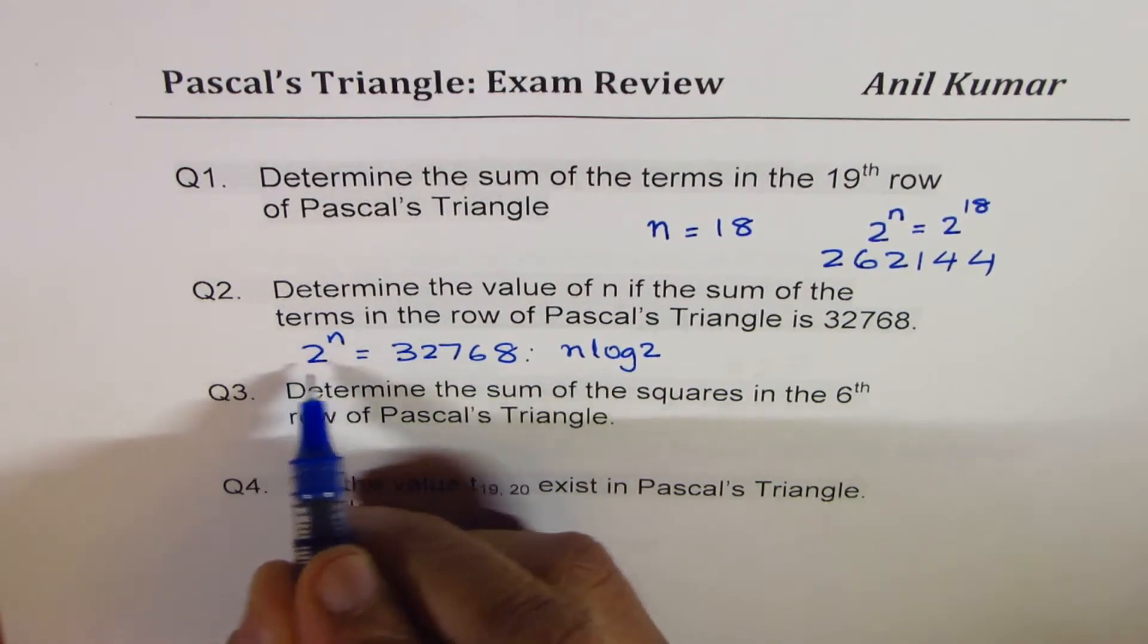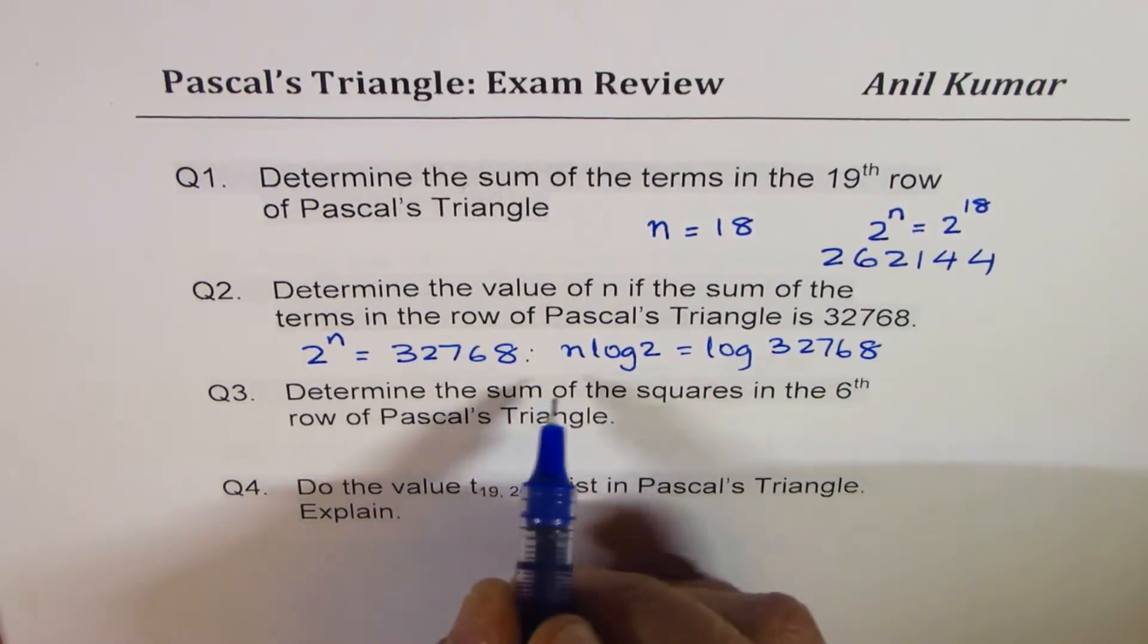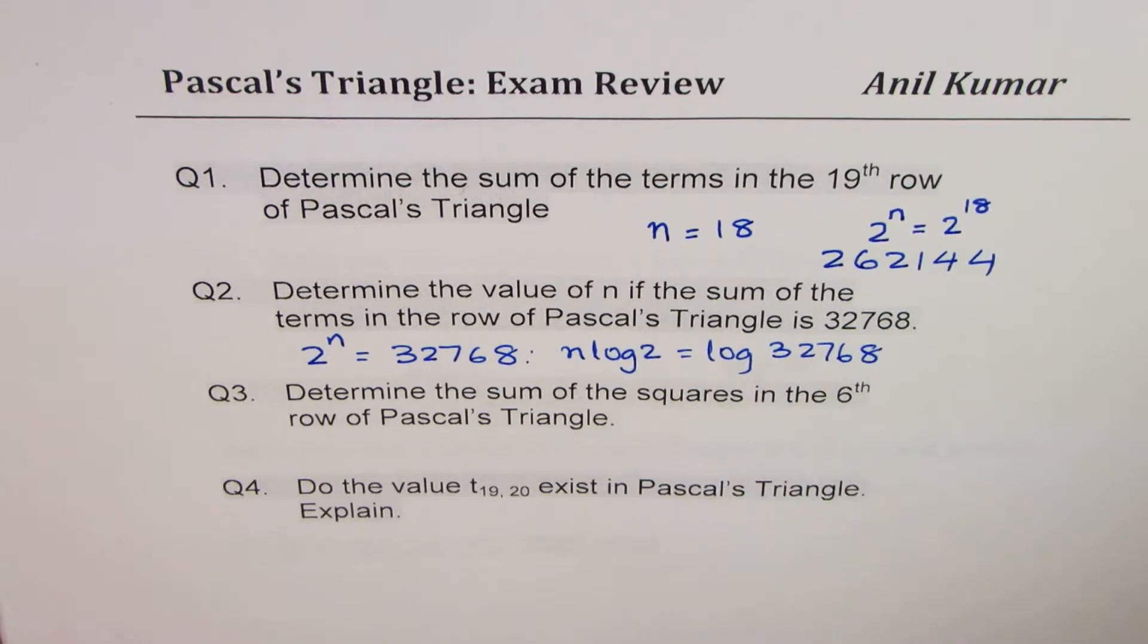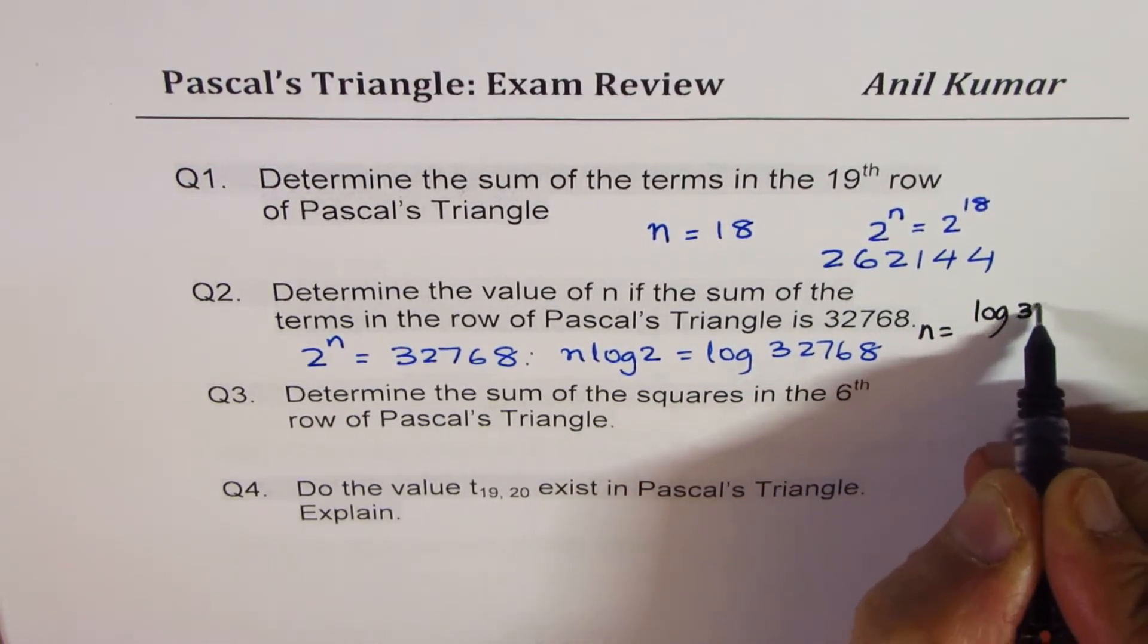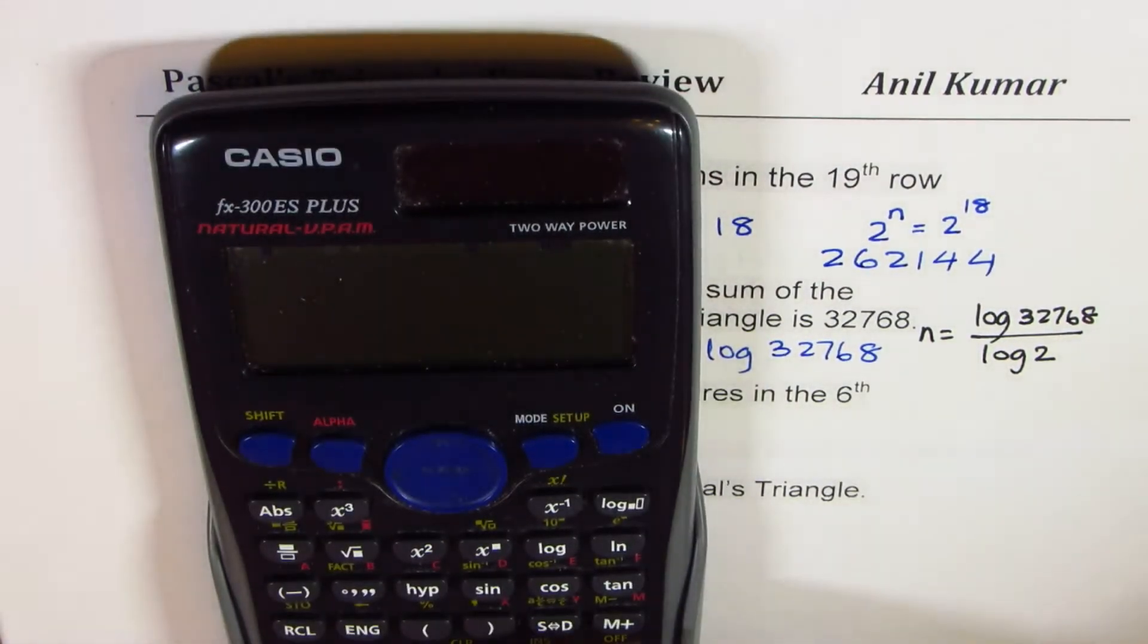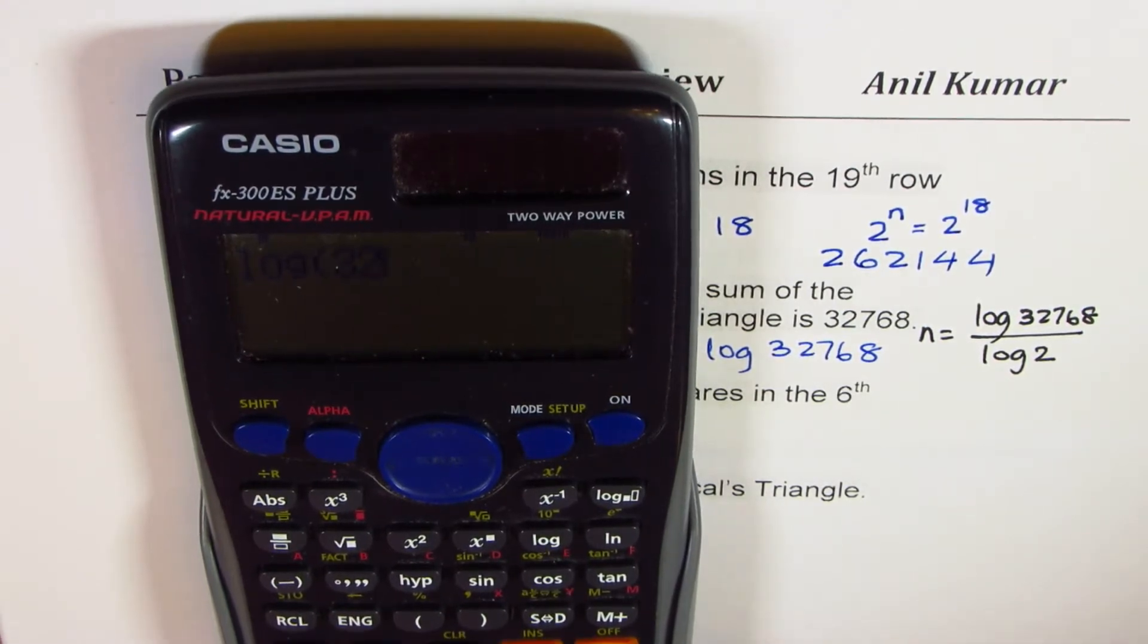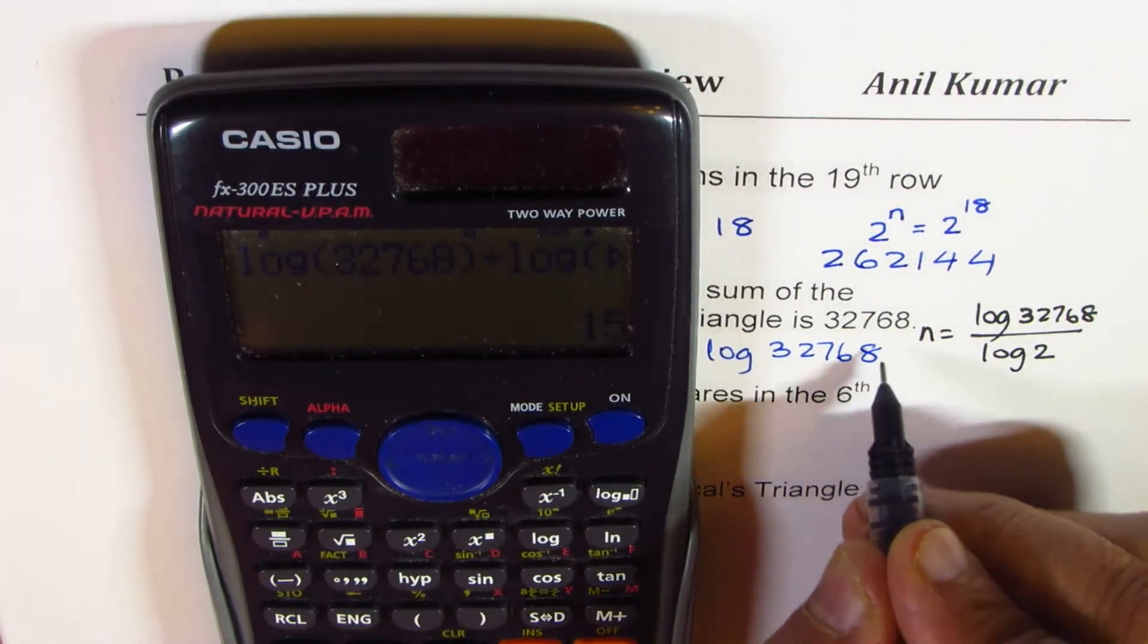The other way is that you could use log. So if I take log on both the sides, I get n log 2 equals to log of this number 32768. So n is equal to log of 32768 divided by log 2, which is equal to 15.